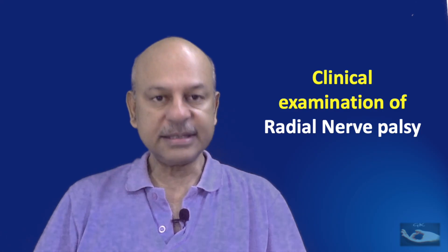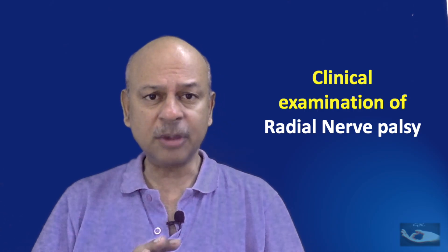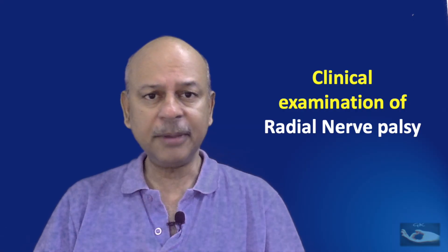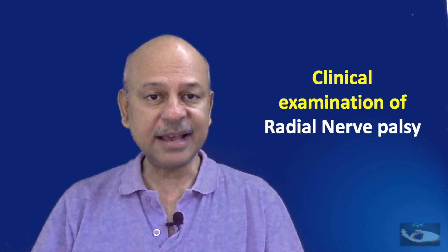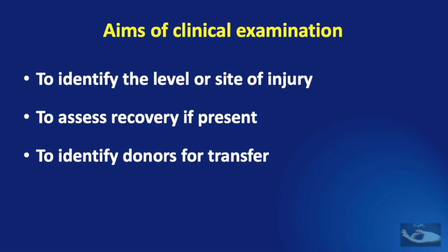Clinical examination of the hand with radial nerve palsy does not stop with saying that there is a wrist drop, finger drop, and thumb drop — and these are must-know points. The aims of clinical examination are to clinically assess the radial nerve palsy by identifying the level or site of the injury, to assess recovery if present, and to identify donors for transfer.